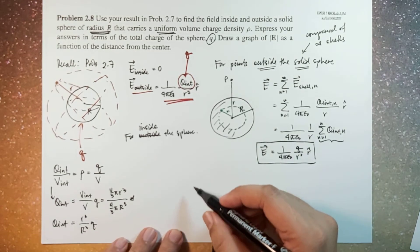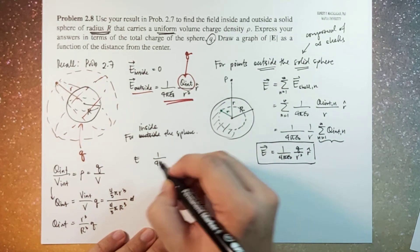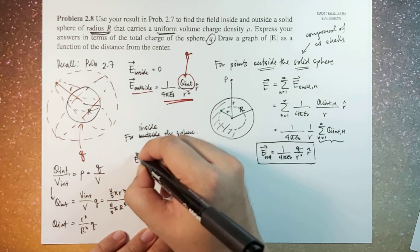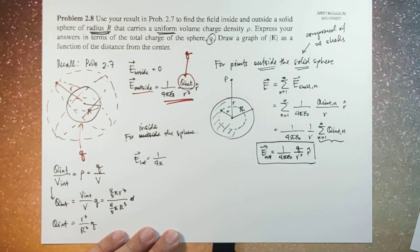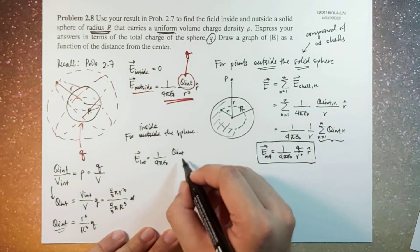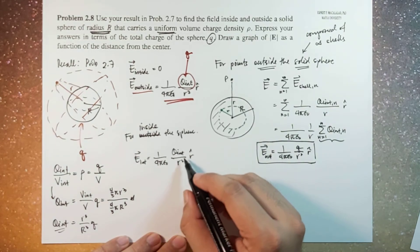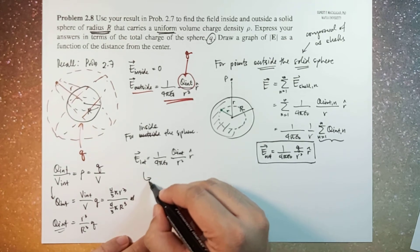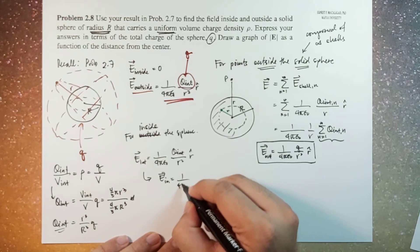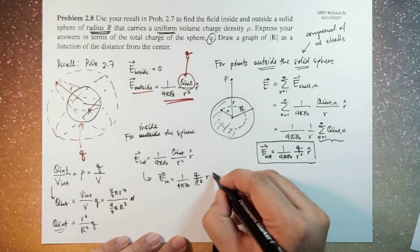We're going to plug that in. So E inside equals 1 over 4 pi epsilon naught times Q interior divided by r squared R-hat. Plugging in Q interior, this becomes 1 over 4 pi epsilon naught times Q over R cubed times r, R-hat.